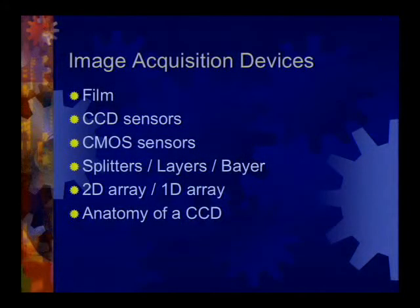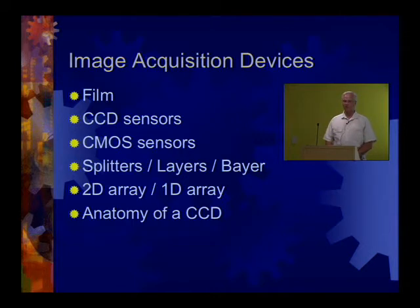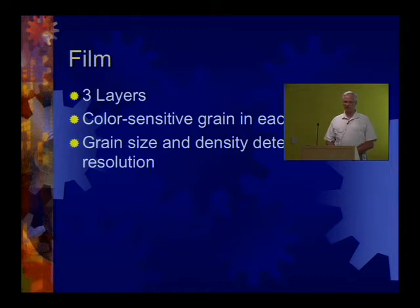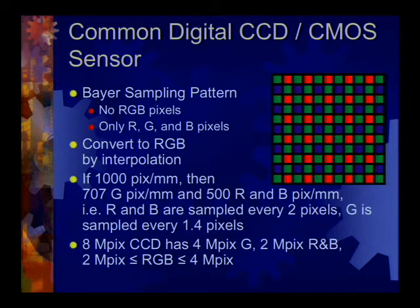Now onto image acquisition devices. Film is a classic acquisition device still in use. CCD and CMOS sensors are the main digital types. There are also mechanisms using prism splitters, different layers, or Bayer patterns for capturing different spectral samples. You can use 1D or 2D arrays. Film generally has three different layers with color-sensitive grain in each layer; grain size and density determine resolution.